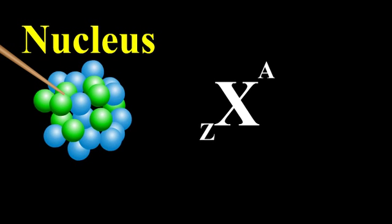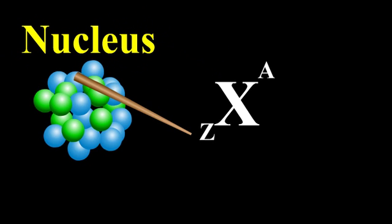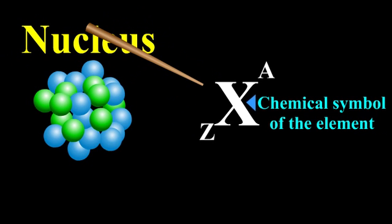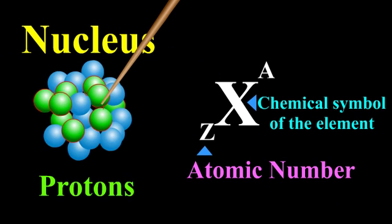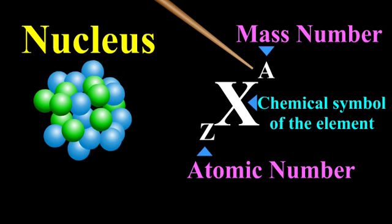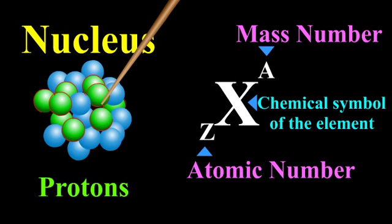How is the nucleus of an element represented? A nucleus of an element is represented as X with superscript A and subscript Z, where X is the chemical symbol of the element. Z represents the atomic number, which is equal to the number of protons, and A is the mass number, which is equal to the total number of protons and neutrons.